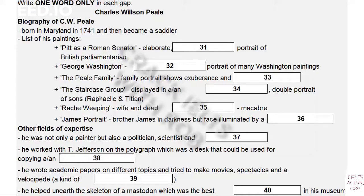But it wasn't any ordinary desk — this one could make several copies of a manuscript at once. He also wrote papers on a wide variety of subjects, from hygiene to engineering. He also tried his hand at inventing a fairly primitive but innovative motion picture technique, new types of eyeglasses, and a velocipede, which is a precursor to the bicycle. Some of the original velocipedes had pedals and some didn't — you sort of scooted along on them using your feet. Unfortunately, I can't remember which type it was that Peale worked on.